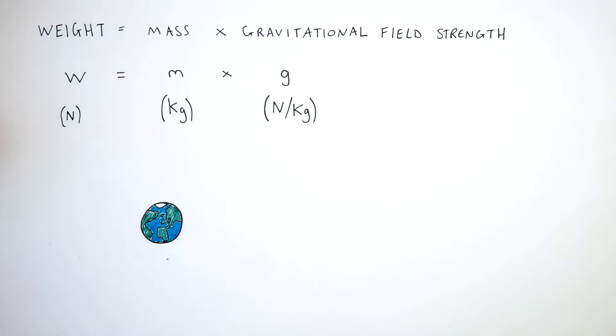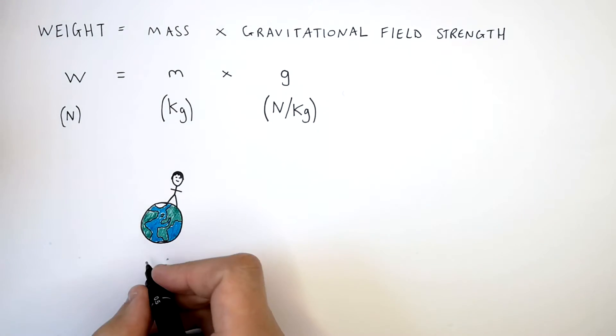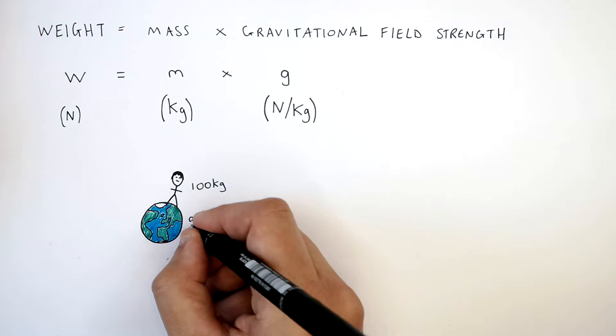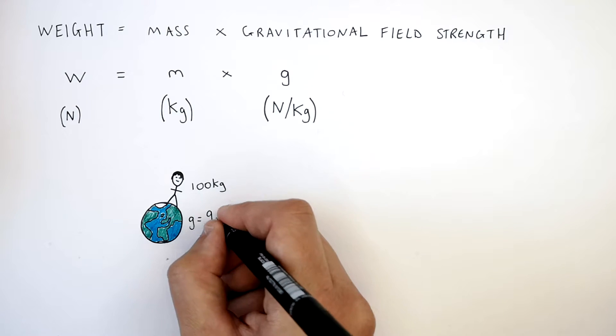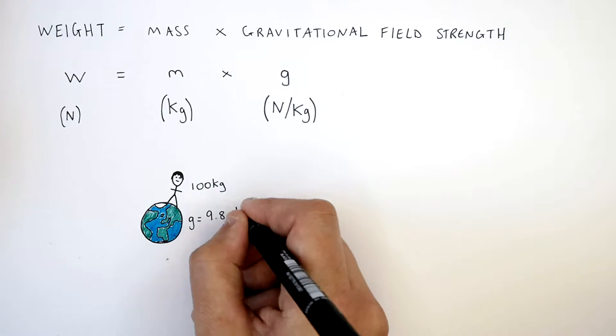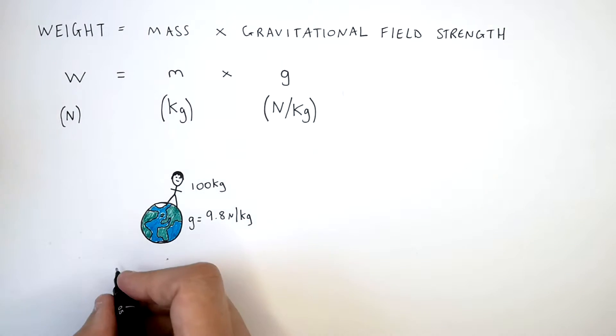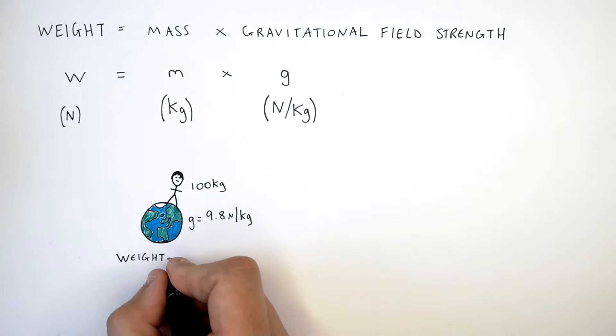So this is planet Earth, and a person has a mass of 100 kilograms. Gravitational field strength on Earth is 9.8 newtons per kilogram. So what is the person's weight?